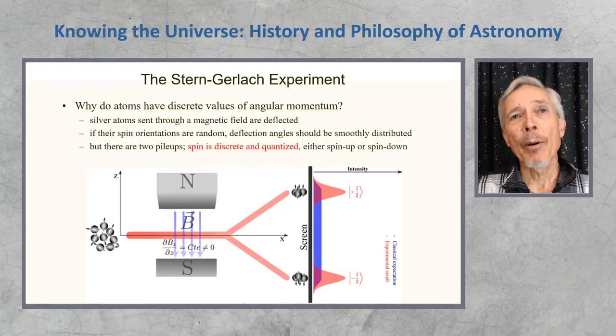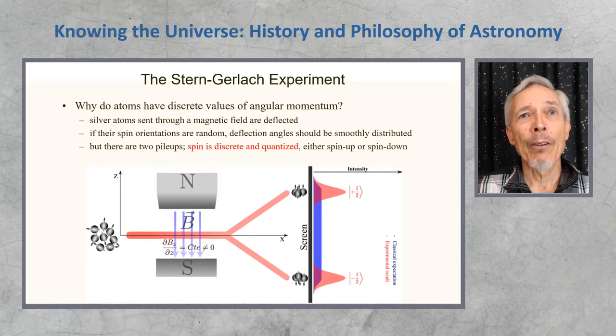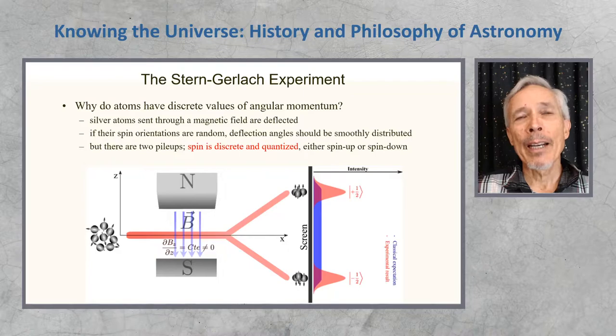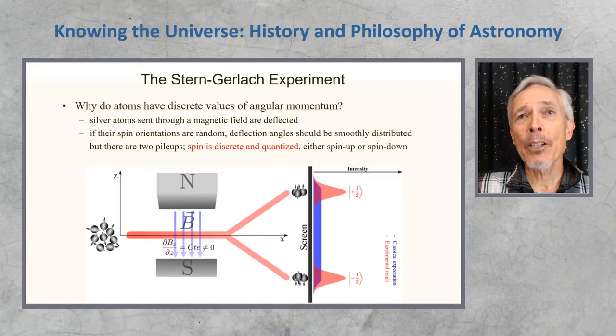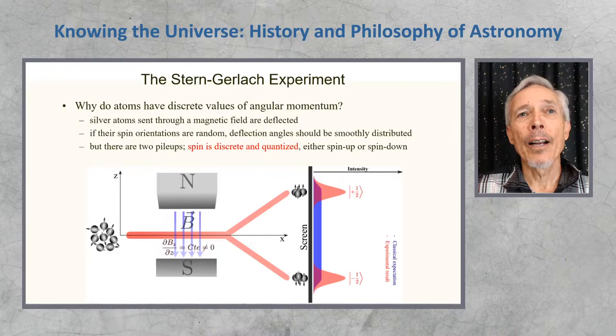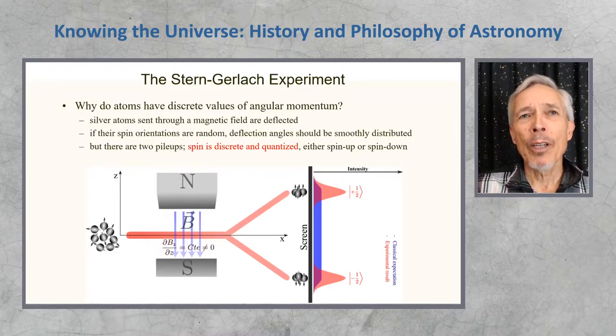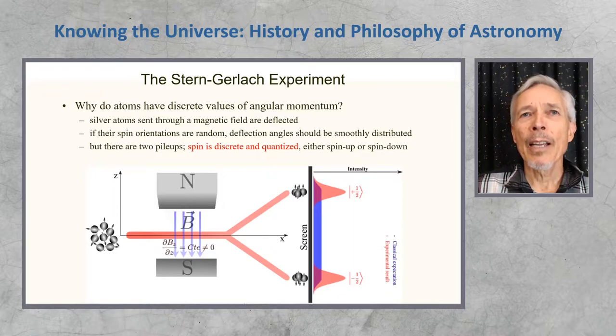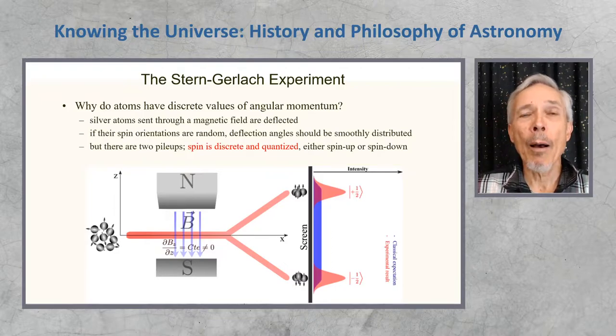The Stern-Gerlach experiment was a little more subtle, but also had a dramatic outcome. The question was why do atoms have discrete values of angular momentum? If you send silver atoms through a magnetic field, they're deflected. If their spin orientations would be random, their deflection angles would be smoothly distributed, like the blue line on the right side of this diagram. But in fact, what you see are two pileups at either end of the apparatus. The spin apparently is discrete and quantized, and these two pileups correspond to the spin up of the particle or spin down, with nothing in between.